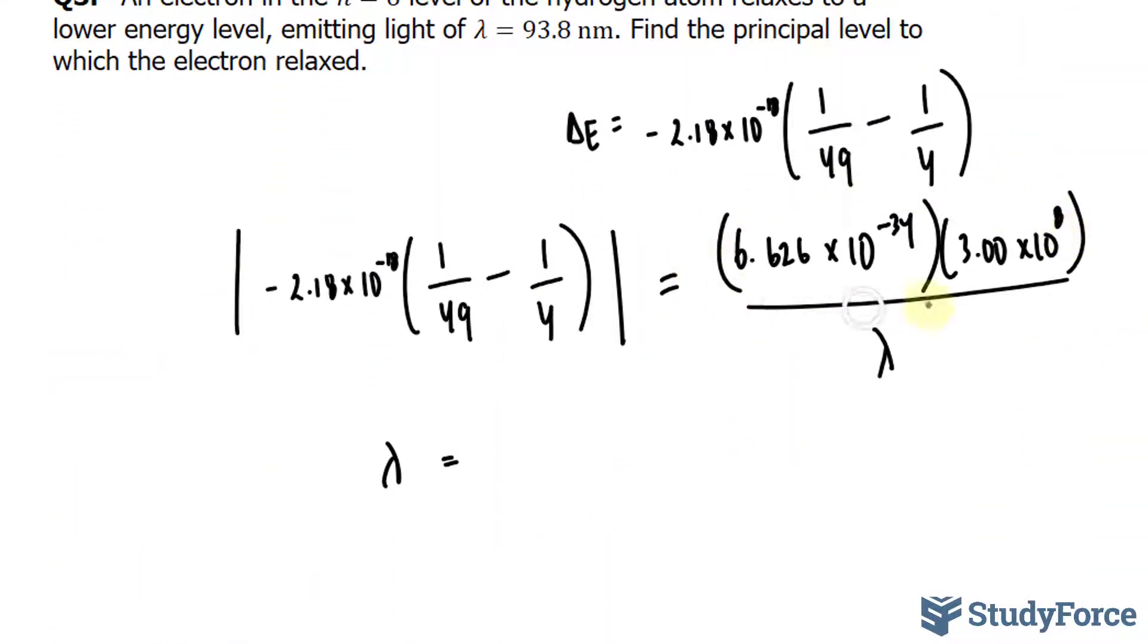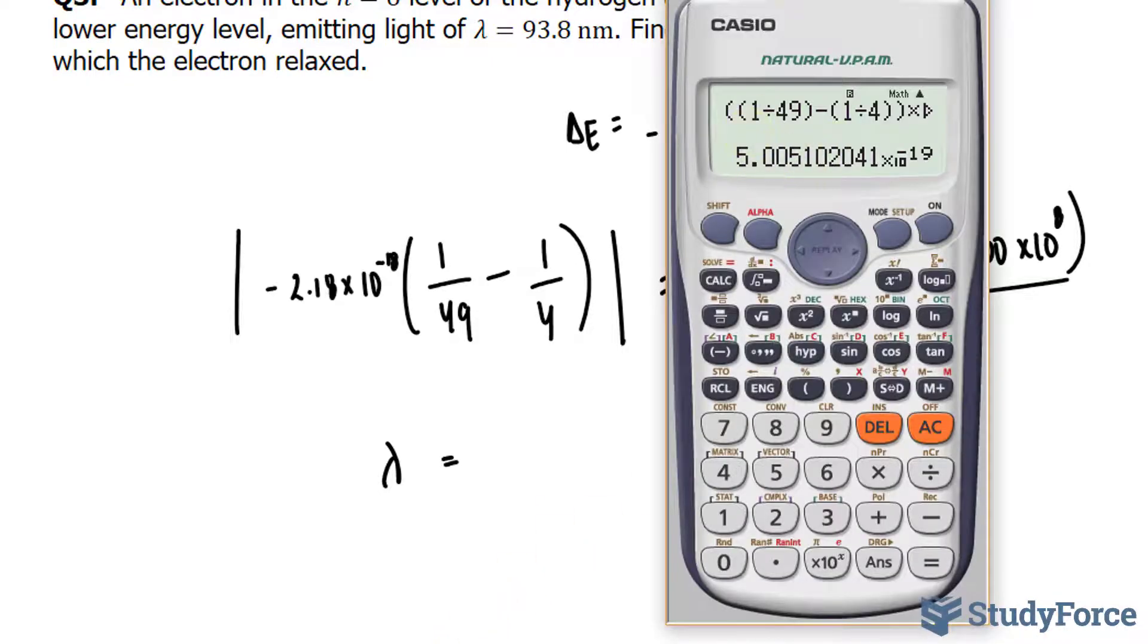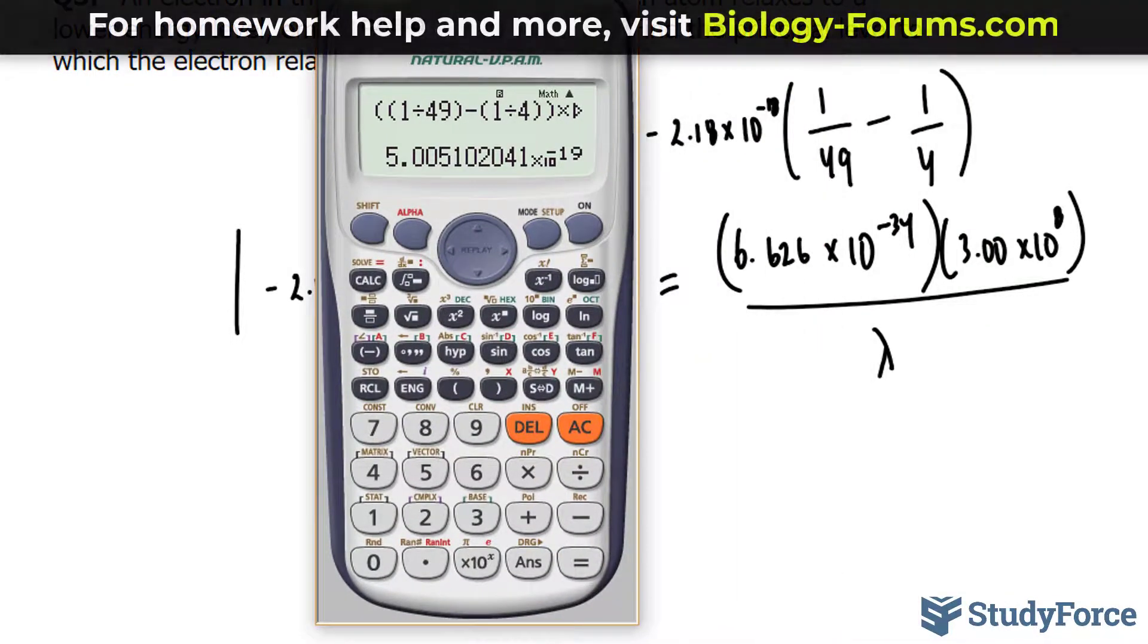So now I'll find the product of these two numbers, and then divide the product by the number that we just found over here. So let's go ahead and do that.